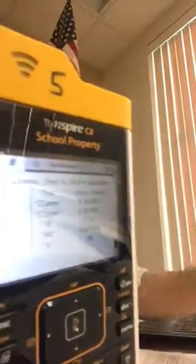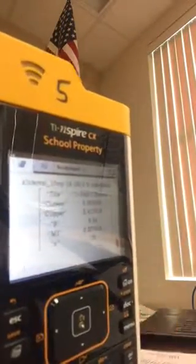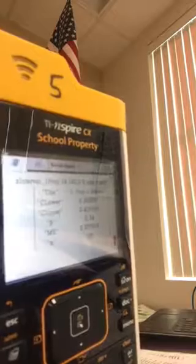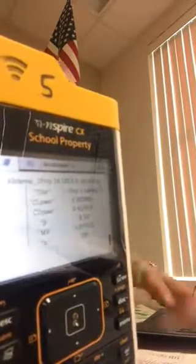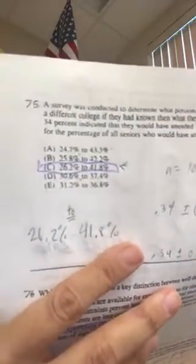and we get exactly our answer. It says the confidence interval, the lower interval is 0.262, and the upper interval is 0.418, and that's exactly what C states. So that is our interval. Next question.